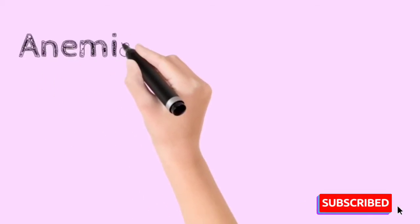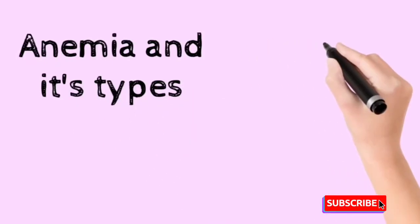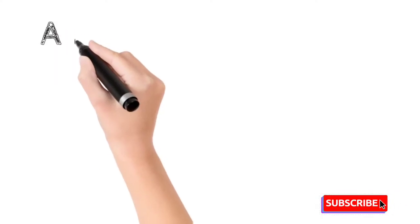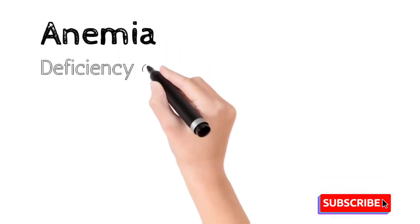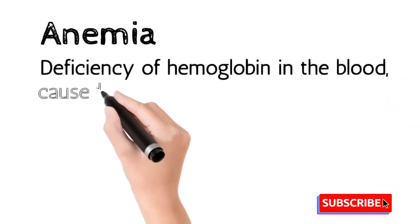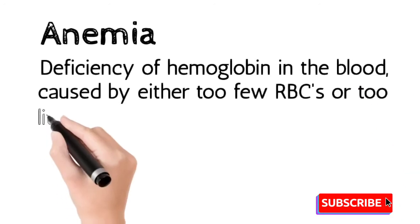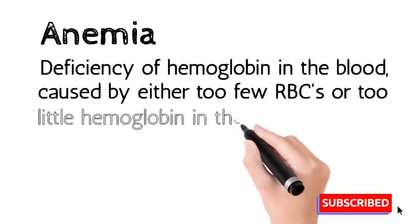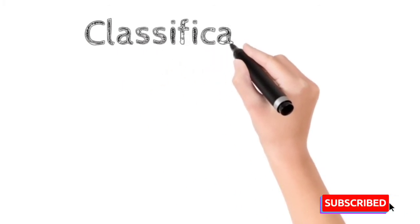Today's topic is anemia — causes, symptoms, and types of anemia. Anemia is a condition during which deficiency of hemoglobin in the blood is caused either by too few RBCs or too little hemoglobin in the cell. Hemoglobin is a very important protein in the RBCs which transports oxygen to the cells. If cells have less hemoglobin, this condition is known as anemia.